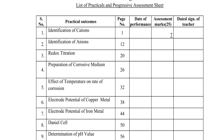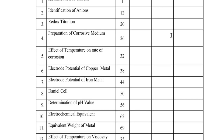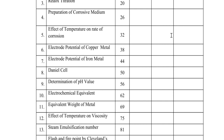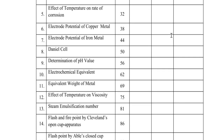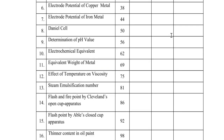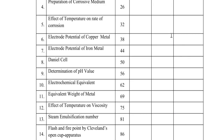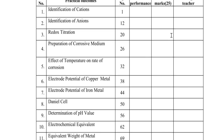Continuing the list: Daniel cell, determination of pH value, electrochemical equivalent, equivalent weight of metal, effect of temperature on viscosity, steam emulsification number, flash and fire point by Cleveland's open cup apparatus, flash point by Abel's close cup apparatus, and thinner content in oil paint. Out of these 16 experiments, you can see videos of the first 7 experiments on my YouTube channel.